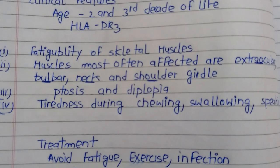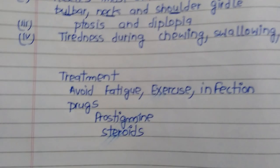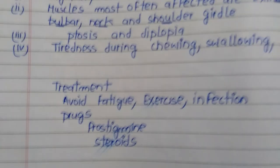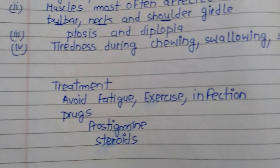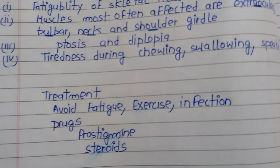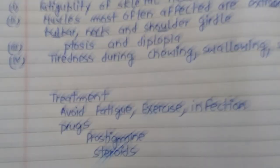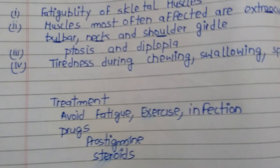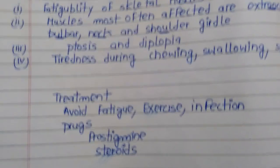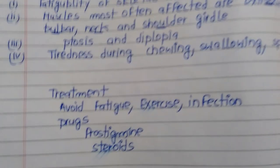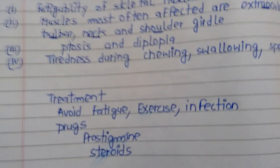Relapses होते हैं और इन चीजों के कारण ज़्यादा होंगे, यह ध्यान रखना है। जब आप डॉक्टर के पास जाते हैं तो diagnosis के लिए वो बोलेगा कि आँखें ऊपर करके 100 तक गिनना है — उस process में eyelids गिर जाती हैं यानी drop हो जाती हैं। आवाज़ भी husky type में आती है, normal नहीं रहती।